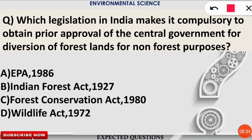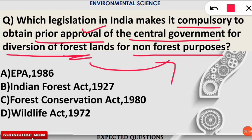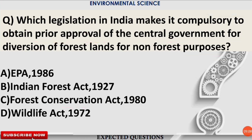The next question: which legislation in India makes it compulsory to obtain prior approval of the Central Government for diversion of forest land for non-forest purposes? The correct answer is the Forest Conservation Act 1980 — it is compulsory to obtain prior approval from the Central Government before diverting forest land to non-forest purposes.